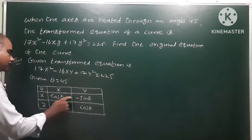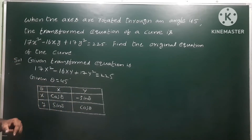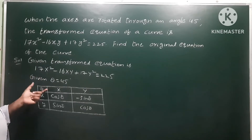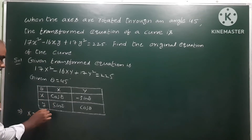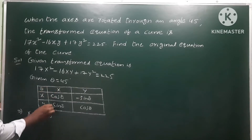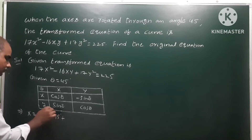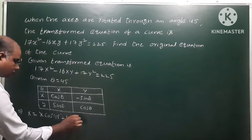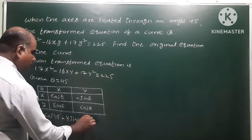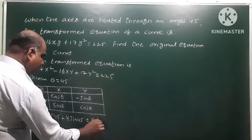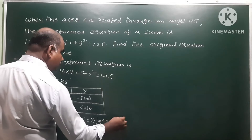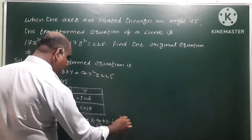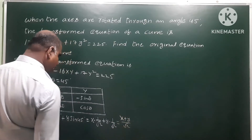Substituting θ = 45°: Capital X = x·cos θ + y·sin θ. With cos 45° = 1/√2 and sin 45° = 1/√2, this gives Capital X = x/√2 + y/√2, which simplifies to Capital X = (x + y)/√2.